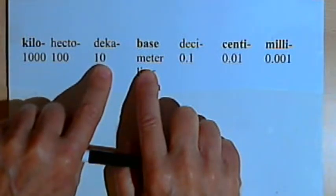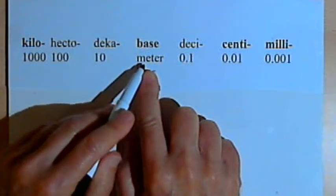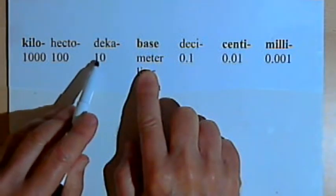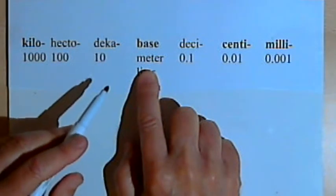and deca, a decameter is ten meters, and also deci, which is one-tenth. So a decimeter is one-tenth of a meter. But again, those three prefixes, hecto, deca, and deci, are not used very often.